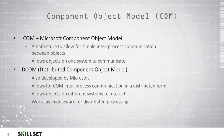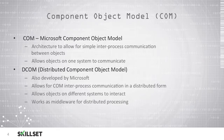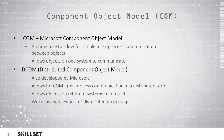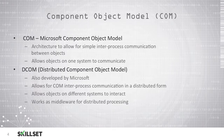Microsoft's COM, or Component Object Model, is an architecture which allows simple inter-process communication to occur between objects, and will also allow objects on one system to communicate with each other. The Distributed Component Object Model, also developed by Microsoft, allows for COM inter-process communication in a distributed form. It allows objects on different systems to interact with each other and works as middleware for distributed processing among two or more systems.